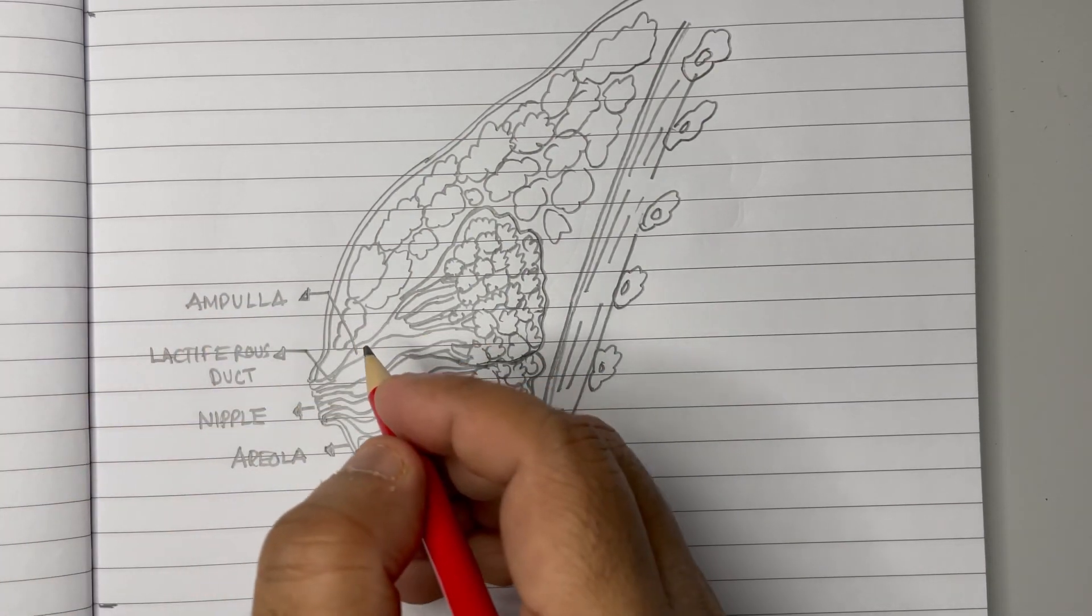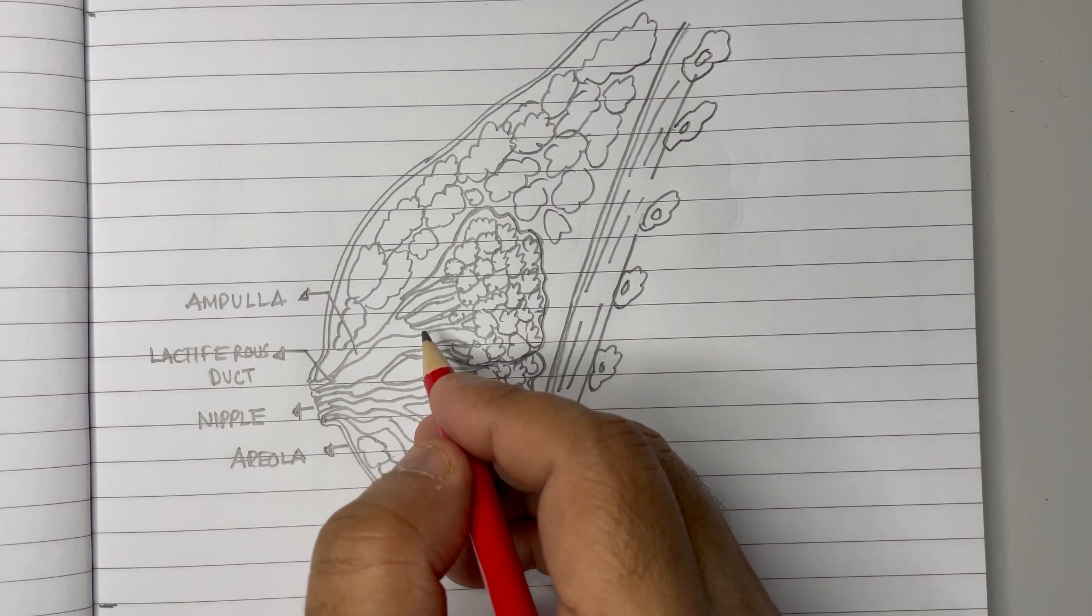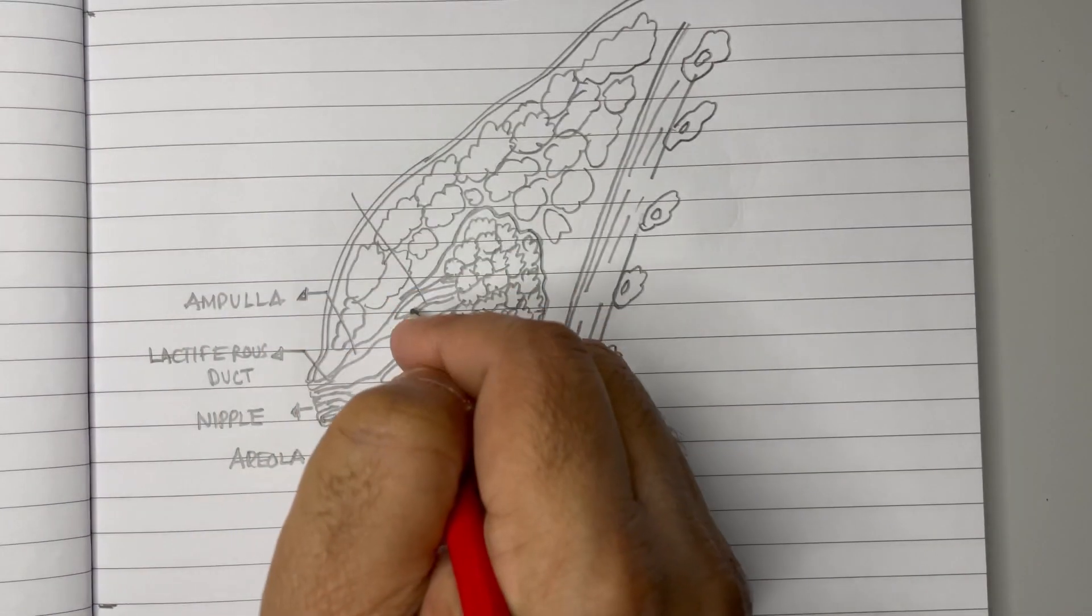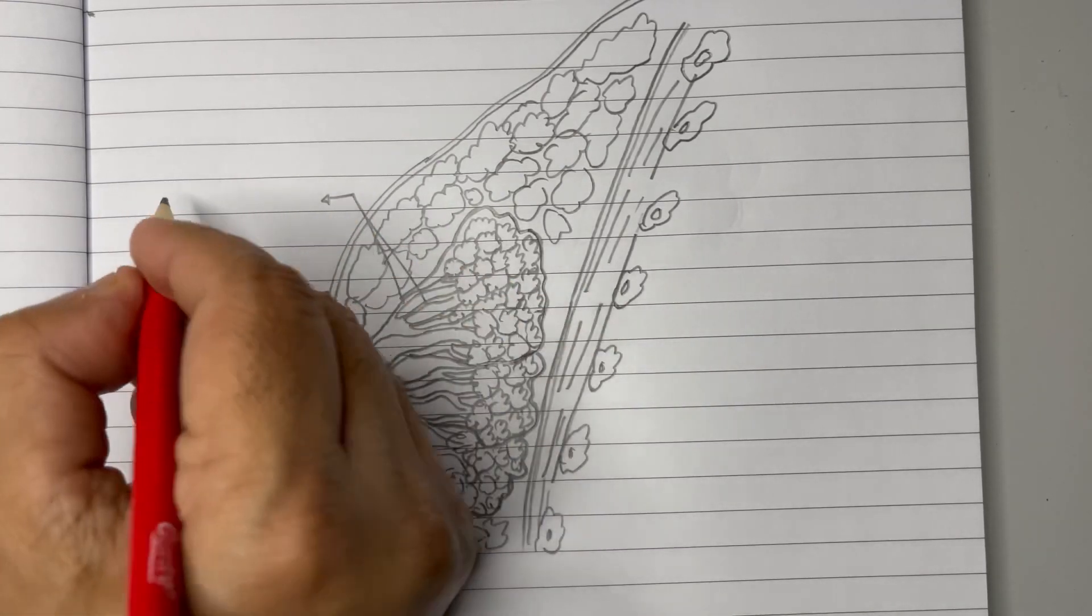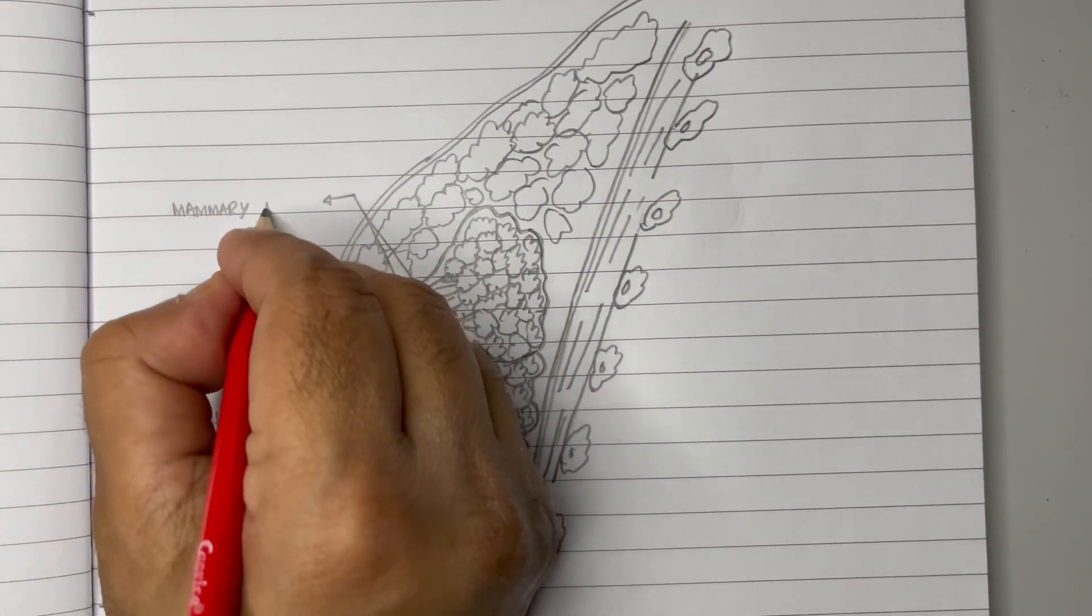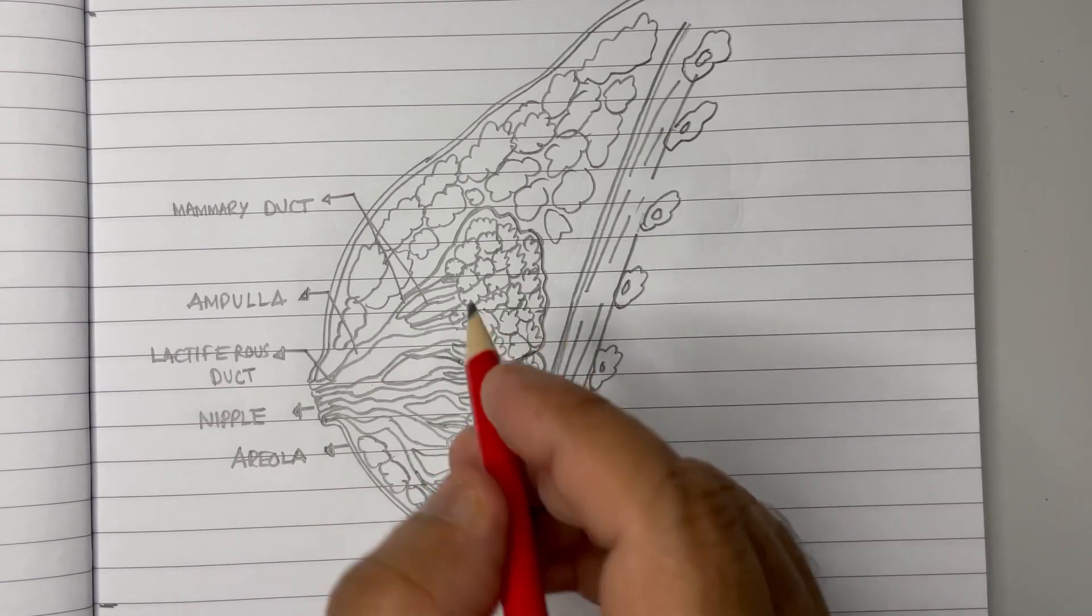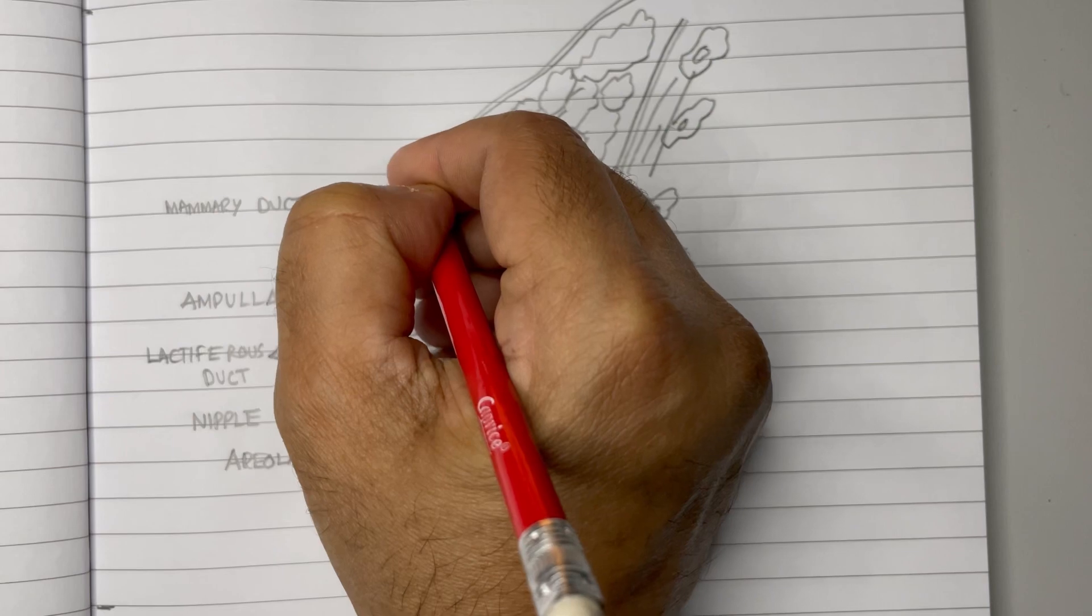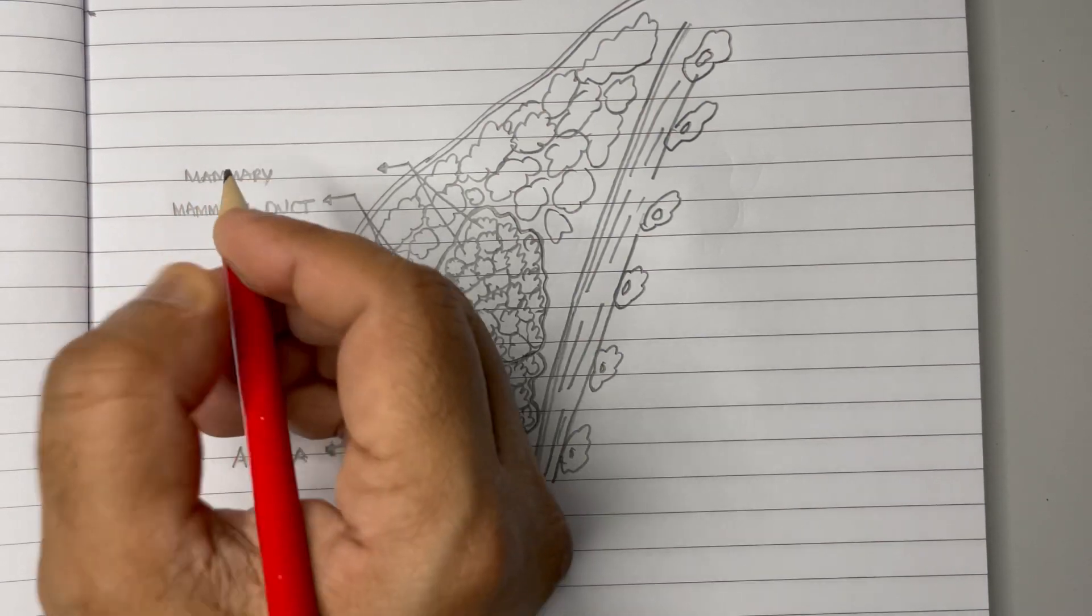Just up to that, the ampulla is dividing to various branches. These branches are called mammary duct. This branch and these all are actually branches joining from the ampulla, so it's called mammary duct. After that mammary duct, we go to the mammary alveolus. This bunch of grape-like structures. One or two alveoli together we can mark and write mammary alveoli.